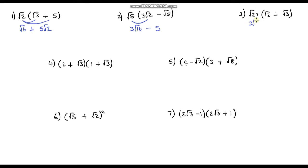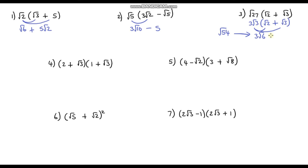Now let's multiply: 3√3 times √2. We have the number 3, and √3 times √2 is √6, so that simplifies to 3√6. If you had kept root 54 and simplified it, you'd also arrive at 3√6. Now the second part: 3√3 times √3. √3 times √3 is 3, and 3 times 3 is 9. So the final answer is 3√6 plus 9. My advice: always simplify surds first, then multiply.